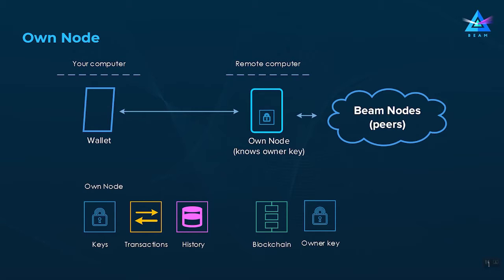because for spending you need another set of keys kept secret in the wallet. However, the owner key should also be kept secret, because anyone who knows it can detect your UTXOs in the blockchain and thus calculate your current balance. If you provide this owner key as a parameter to a node, it becomes your own node, and it can now detect your UTXOs and keep an updated state with an exact balance at any time.